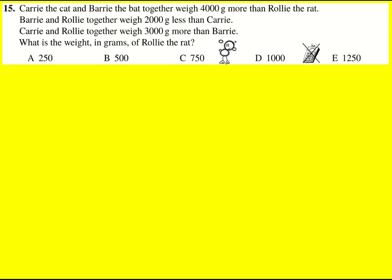It's pretty much always a simultaneous equation question creeping into these challenges, and here it is. So I'm going to say that Carrie the cat weighs C grams, Barry the bat weighs B, and Rolly the rat weighs R.